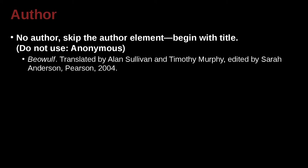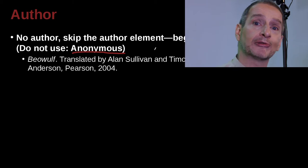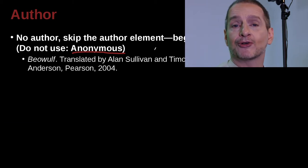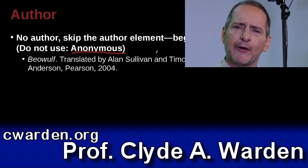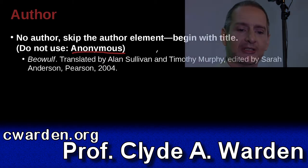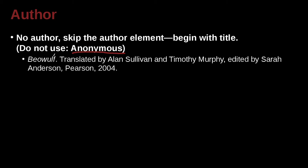What if there really is no author? We can't find an author. As we said, we skip the author. Here's an example: Beowulf, which is an ancient, famous story, and we don't know who the author is. So we just do not write the author's name. Do not write the word 'anonymous' — anonymous means the author is unknown. The MLA is very clear: do not write anonymous. Just skip it and begin with the name of the book, paper, movie, or whatever.